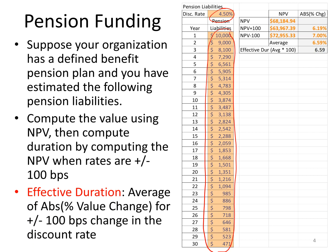We'll look at how the value of that net present value will change if rates are up or down 100 basis points. We'll calculate the NPV at 4.5%, then at 5.5% and 3.5%. We'll calculate the effective duration, which will be the average percentage change in absolute terms if rates are plus or minus 100 basis points.